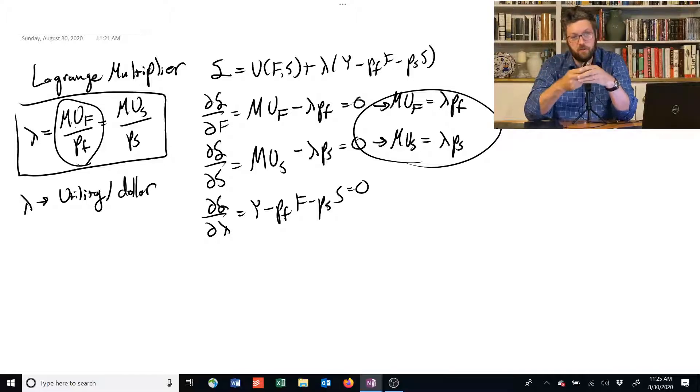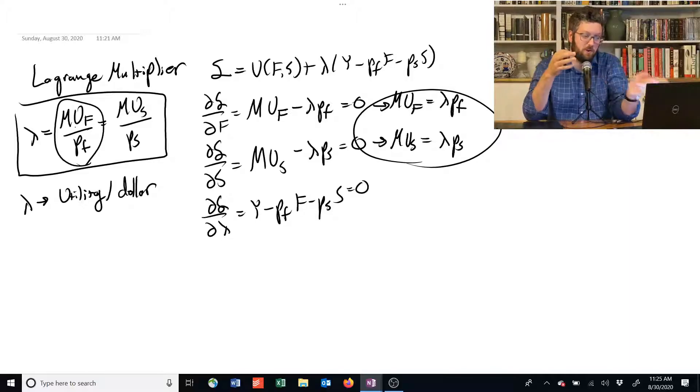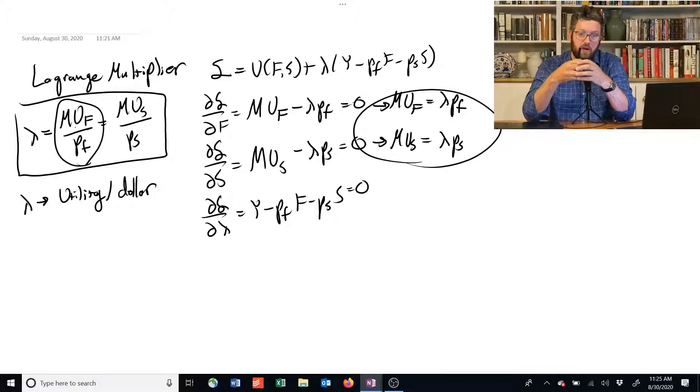And the reason they're equal to each other is because if you're maximizing utility, then there's no way to improve your utility and get more by moving a dollar from one place to the other. So if they were not equal, that meant that if you took a dollar away from buying food, you'd lose the marginal utility of food divided by the price. But if you shifted that over to buying shelter, the amount you gain would offset your loss. And only when they're equal is it not possible to basically increase utility by shifting money around.